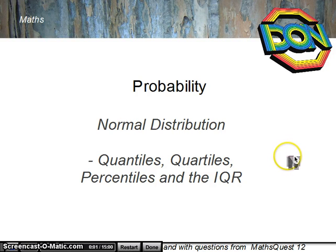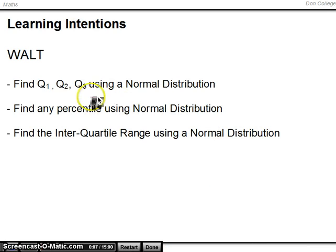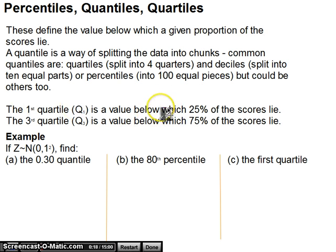Hi, this video is on the normal distribution. We're going to be looking at quantiles, quartiles, percentiles, and the interquartile range. So, learning to find Q1, Q2, and Q3 using a normal distribution, find any percentile using a normal distribution, and find the interquartile range using a normal distribution.